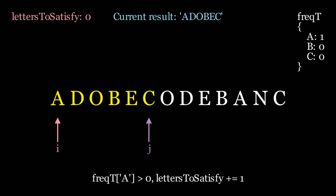Now the frequency at a is greater than 0 — we went back up to 1. So letters to satisfy is no longer 0; we have one more letter we need to satisfy because we don't have enough a's. Letters to satisfy goes to 1, and now we move the i pointer along.